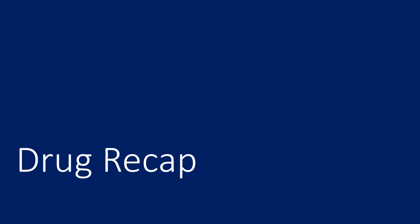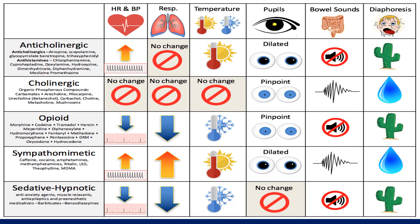Let's do a quick review. In a setting of someone who's intoxicated, what's more important than identifying the relevant agent is understanding the clinical toxidrome. A toxidrome is a constellation of symptoms that relate to a specific drug intoxicant. These are the main toxidromes: anticholinergic, cholinergic, opioid, sympathomimetic, and sedative-hypnotic. By this point, many of you have probably seen one or more of these toxidromes, if not all of them.